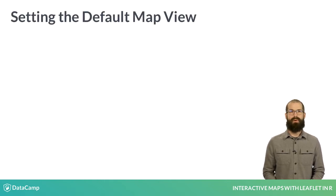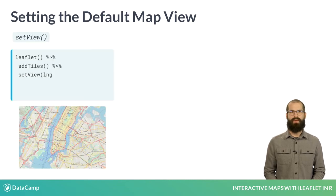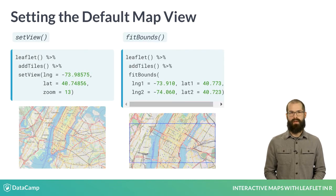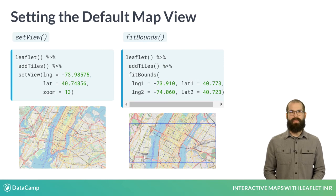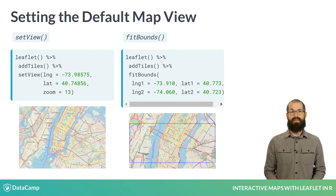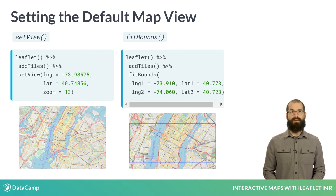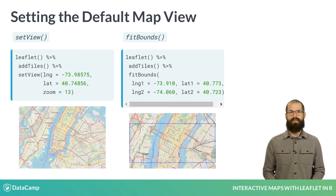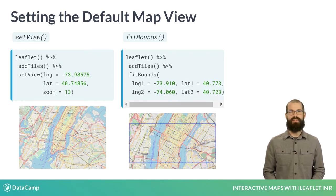There are two common approaches to setting the default view of your map: set view and fit bounds. Set view allows you to pick a single point at the center of your map, whereas fit bounds allows us to set the view based on a rectangle. To use fit bounds, we specify two diagonal corners of a rectangle. I typically use set view as I find it easier to iterate through different possibilities using this approach.